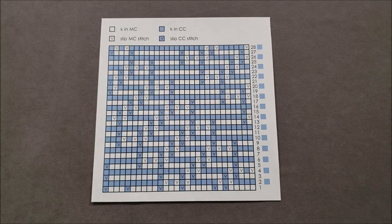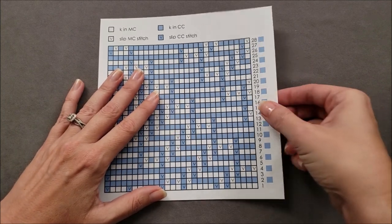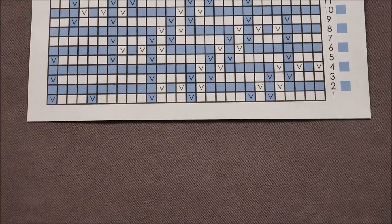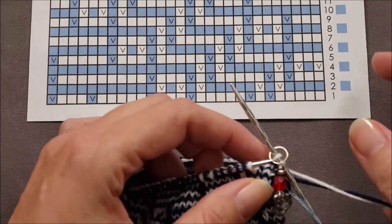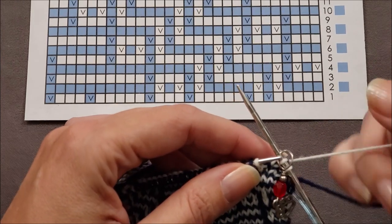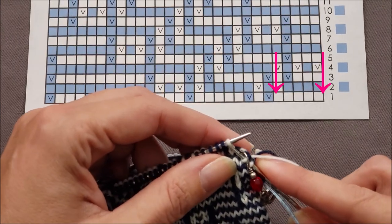So I'll knit across part of round one so you can see how the chart relates to what you're knitting. Again, round one is in the white yarn because the block before it is white. The first five stitches are knit.